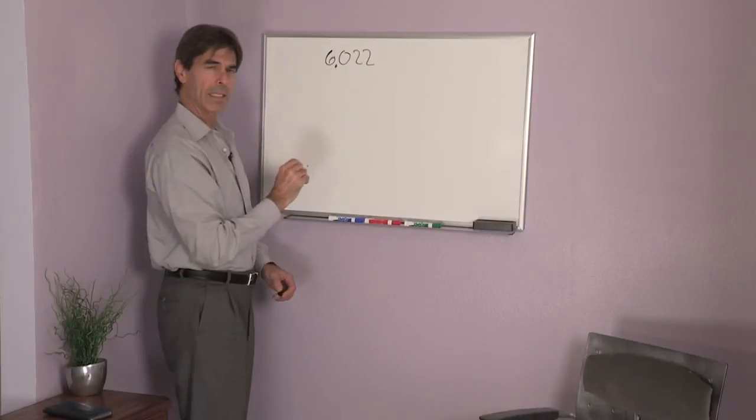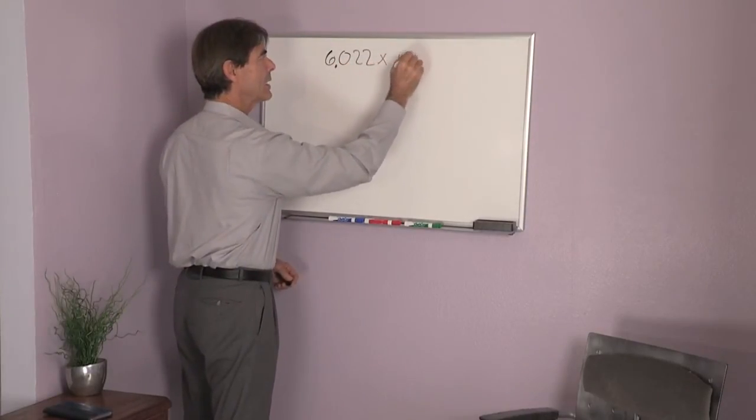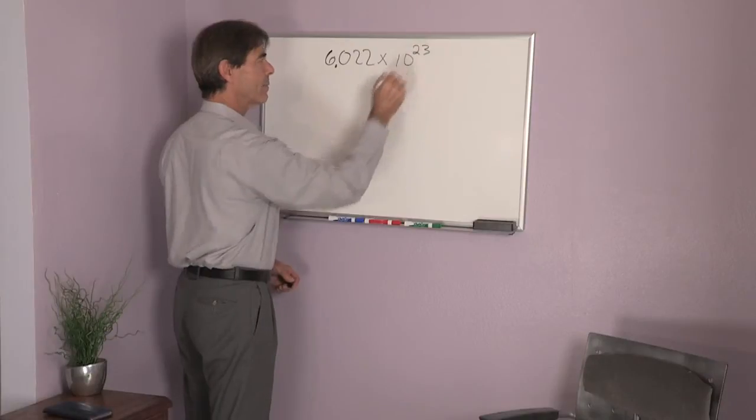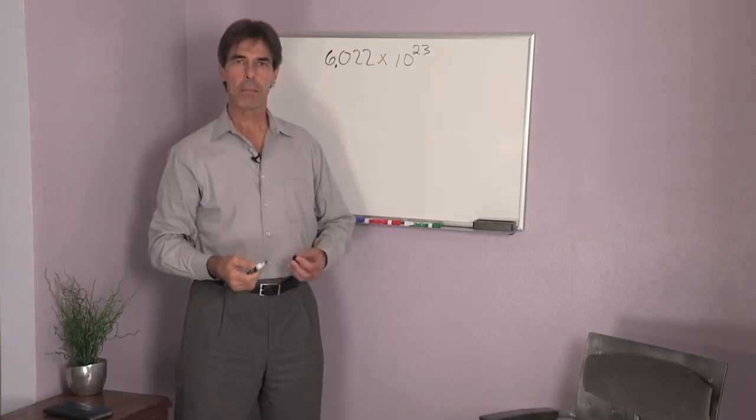So I put a decimal point behind the zero times 10 to the 23. This is the number of atoms or molecules in a mole.